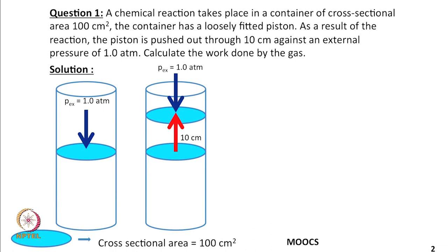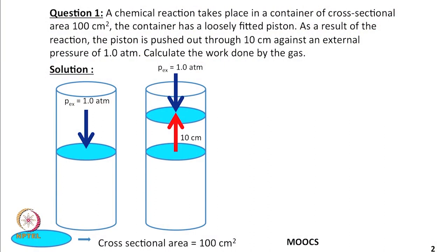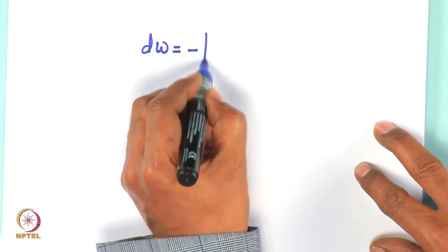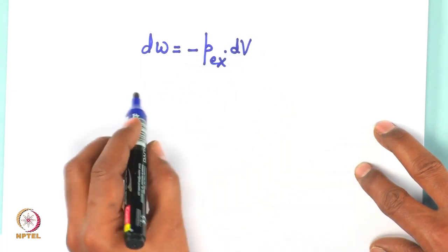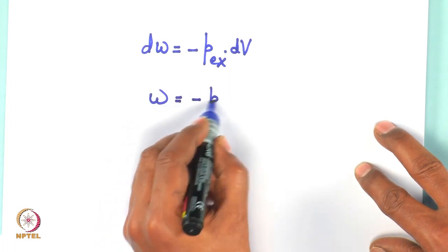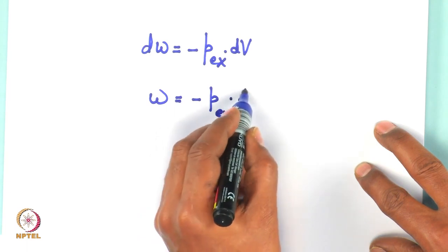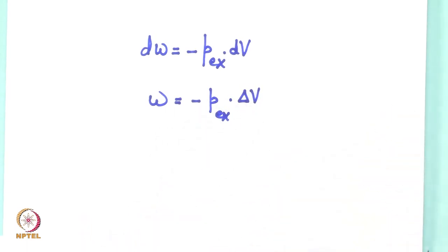How do we approach this question? First, let us identify whether the conditions given are reversible or irreversible. Please note that the piston is pushed out against an external pressure of 1 atmosphere — the external pressure is fixed. Therefore, the process is irreversible. So we use the equation dW = −P_external dV, or in integrated form, W = −P_external × ΔV, where ΔV = V_final − V_initial.